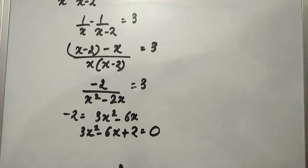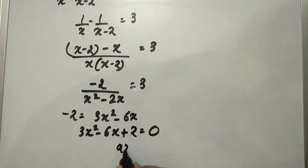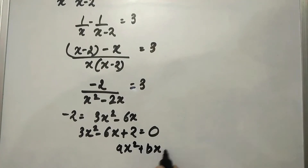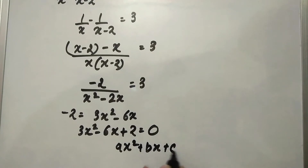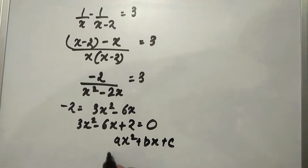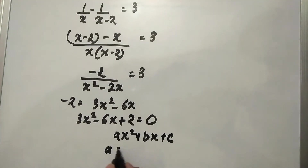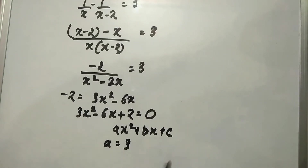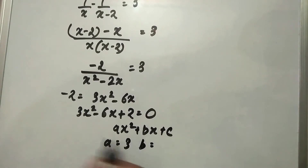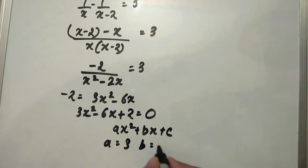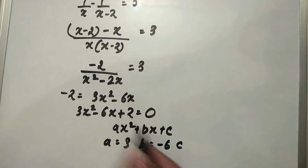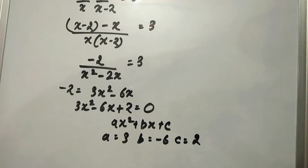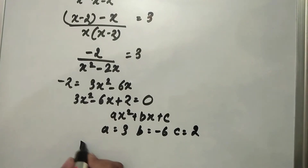The quadratic equation is ax squared plus bx plus c. From this equation, a equals 3 because the coefficient of x squared is 3, b equals minus 6, and c equals 2. Now let's find the discriminant.